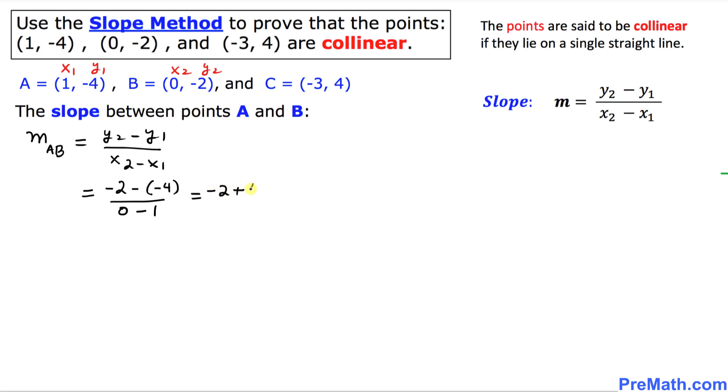That's going to become -2 minus -4, which is equal to 2 over -1. So therefore, our slope between A and B turns out to be -2.